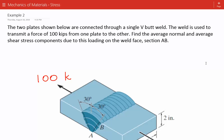The problem statement that we have is the two plates shown below are connected through a single V butt weld. The weld is used to transmit a force of 100 kips from one plate to the other.